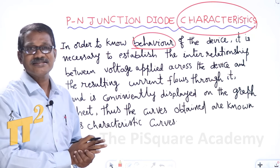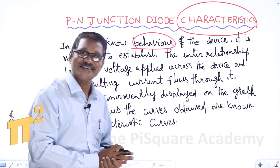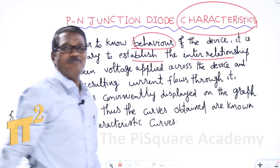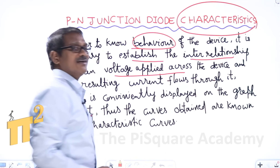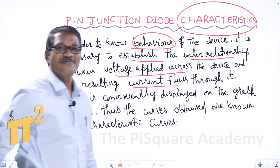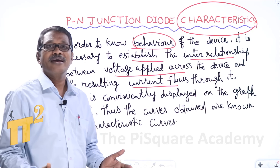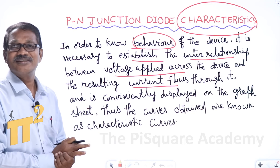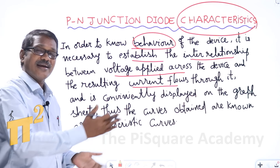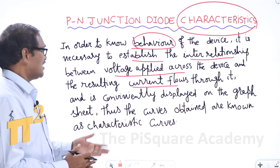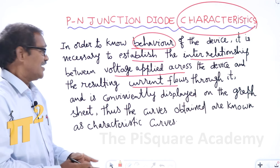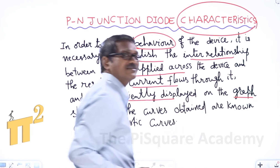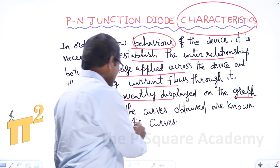If you want to know the behavior of the device, it is necessary to establish the interrelationship between voltage applied across the device and the resulting current flowing through it. If we apply voltage across the device, current definitely flows through it. This interrelationship is conveniently displayed on a graph sheet, and the resulting curves are known as characteristic curves.